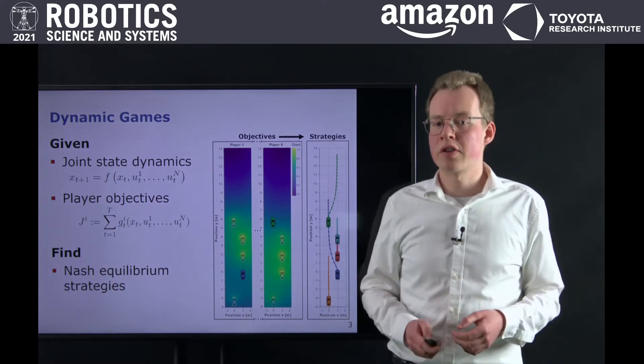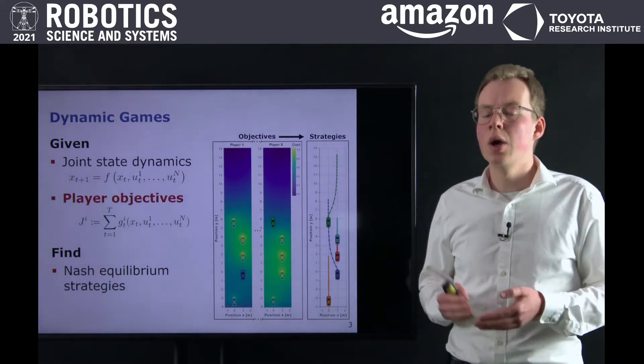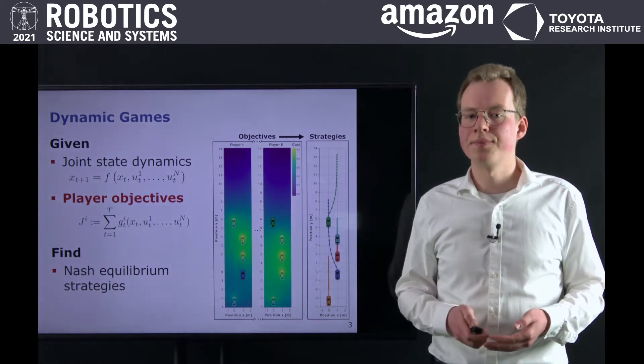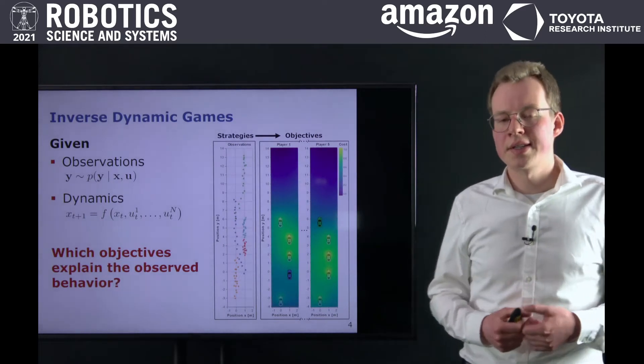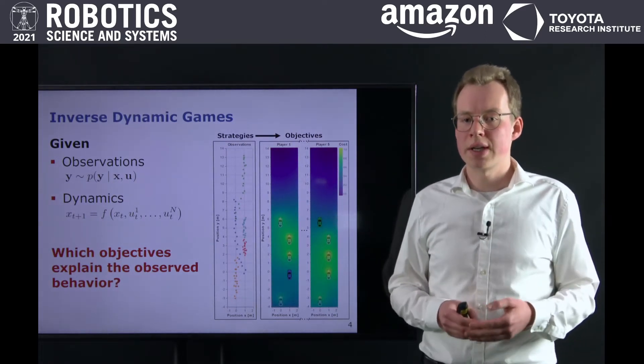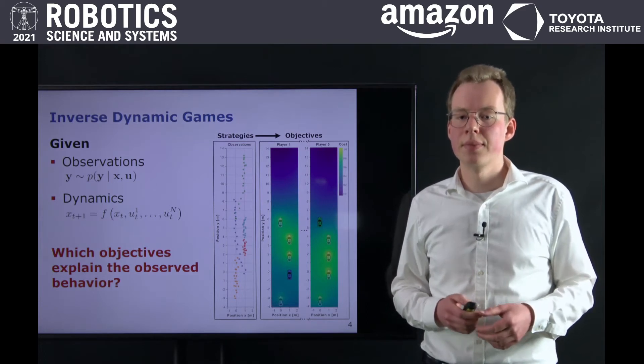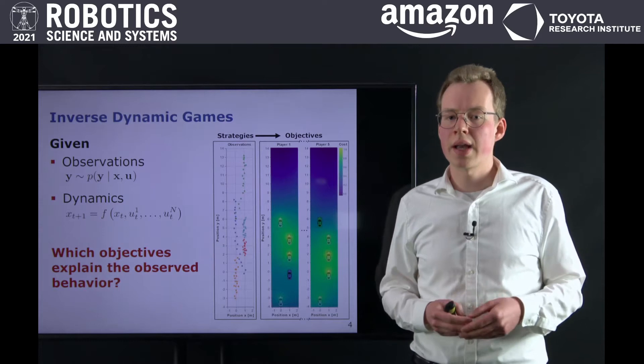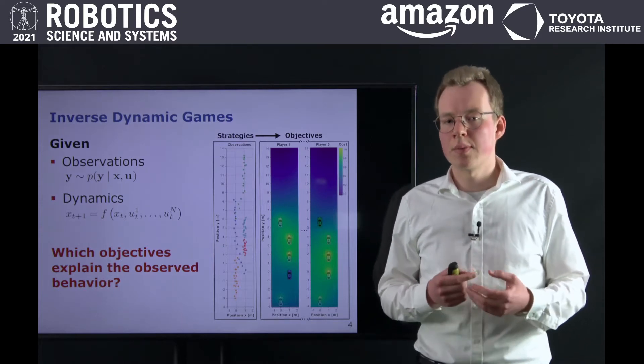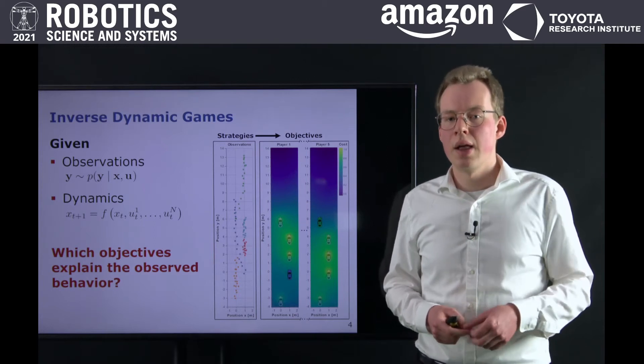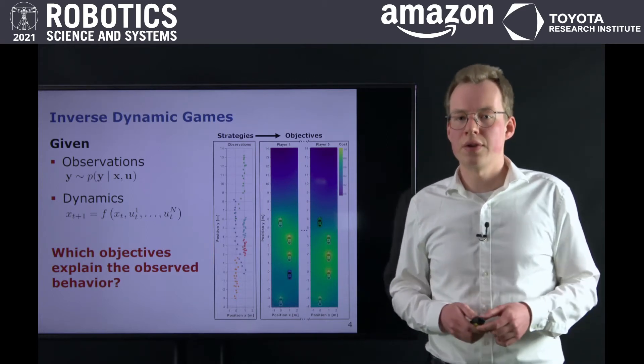While this mathematical framework is very powerful, it can be challenging to specify player objectives which accurately capture desired behavior. To address this issue, in this work we present an approach for identifying player objectives from observed interaction. That is, for a given sequence of partial state observations y and prescribed dynamics f, we attempt to find those player objectives which explain the observed behavior. This problem is commonly referred to as an inverse dynamic game.